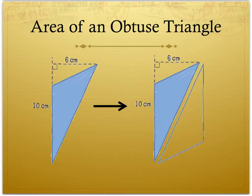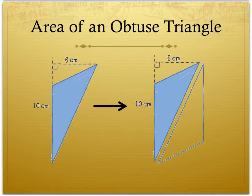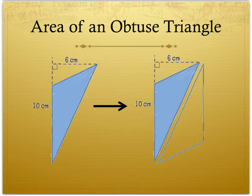Now we are going to look at an example of how to calculate the area of an obtuse triangle. For this example, we have our base of 10 cm, and we extended our base out in order to calculate the height, which is 6 cm. It can be hard to imagine this triangle as half of a rectangle, so it can be easier to imagine the same triangle arranged to form a parallelogram, which is seen here. This parallelogram has the same base and same height as the triangle. We could rearrange this parallelogram into a rectangle, but we already know that the area of a parallelogram is equal to base times height.